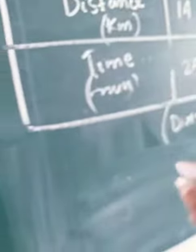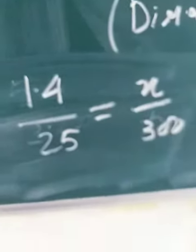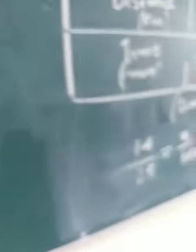14 upon 25 would be equals to x by 300. Now what we have to do is just cross multiply it. So x equals 14 into 300 upon 25.